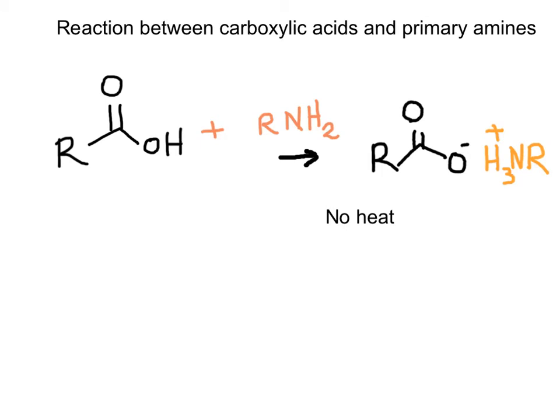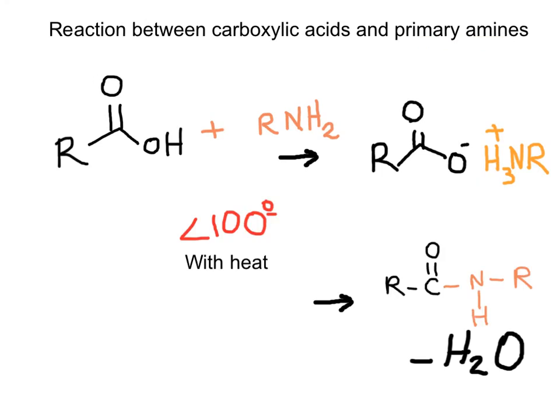In the reaction between a primary amine and a carboxylic acid without heat, the product is again an ammonium salt. Notice the number of hydrogens bonded to the nitrogen. When the ammonium carboxylate is heated above 100 degrees, we get a secondary amide.